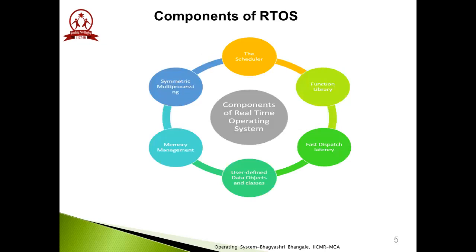Now these are some components of RTOS: the scheduler, functional library, fast dispatch latency, user-defined data objects and classes, and memory management. The scheduler schedules various jobs and processes which need execution. When some process or event has high priority, the scheduler picks only that process for execution based on its priority. There are various types of schedulers: short-term scheduler, long-term scheduler, and medium-term scheduler.